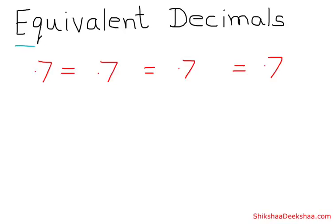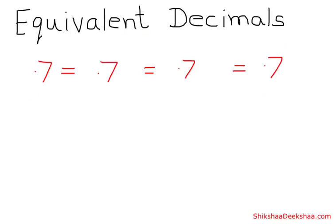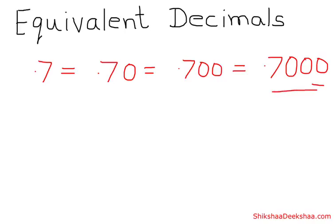Equivalent decimals — equivalent means equal. So what does equivalent decimals mean? It means 0.7 is equal to 0.70, which is equal to 0.700, which is equal to 0.7000. We can keep writing as many zeros as we want after 0.7.